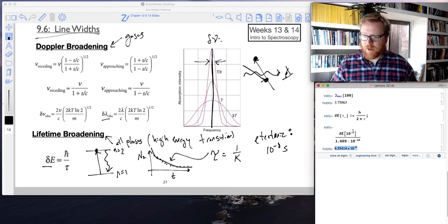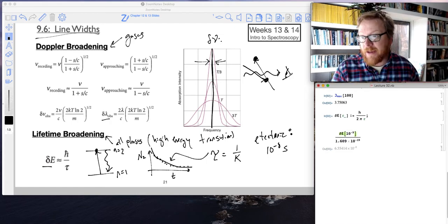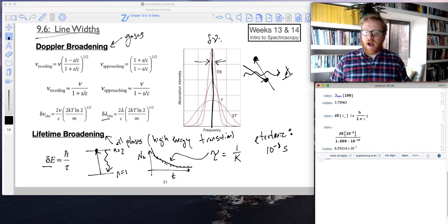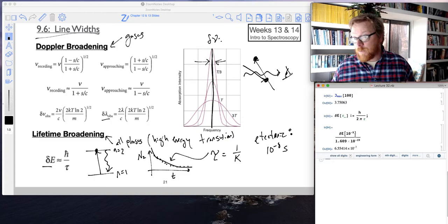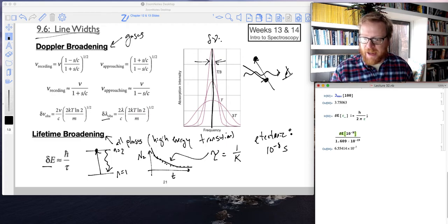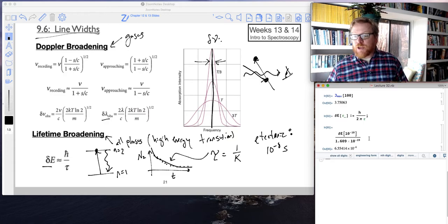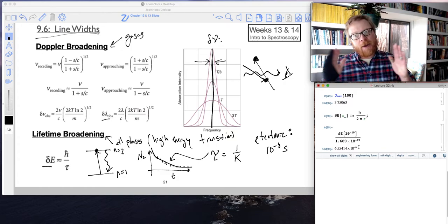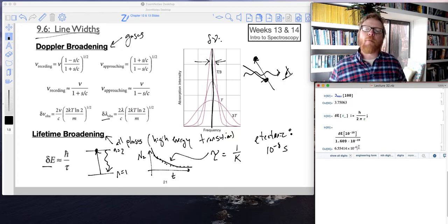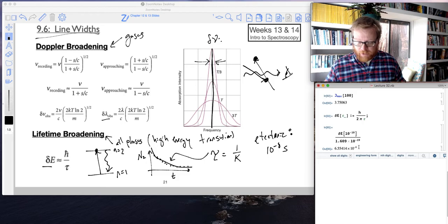But what happens if maybe I increase that lifetime by a factor of 10? So now you can see that that width is getting bigger. So if I go to 10 to the minus 10 for my lifetime, so now I'm making it even shorter, a really fast lifetime. You can see now that width, because of this inverse relationship, that width is getting bigger. So the faster our molecules decay, the more uncertainty there is in where its peak should appear.